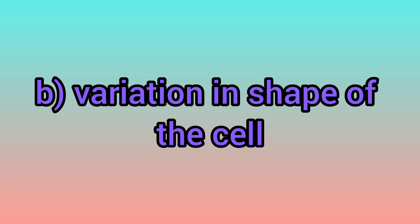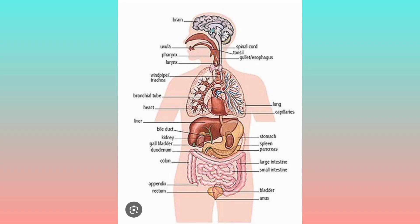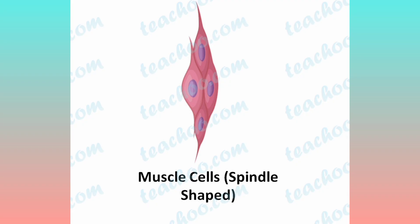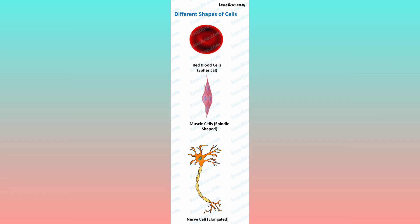Next, let us discuss about variation in the shape of cells. Though the human body is made up of many cells, not all cells are identical in shape. For example, nerve cells of humans are long and branched, and muscle cells are spindle-shaped — meaning long and pointed at two ends. So we can observe these variations.